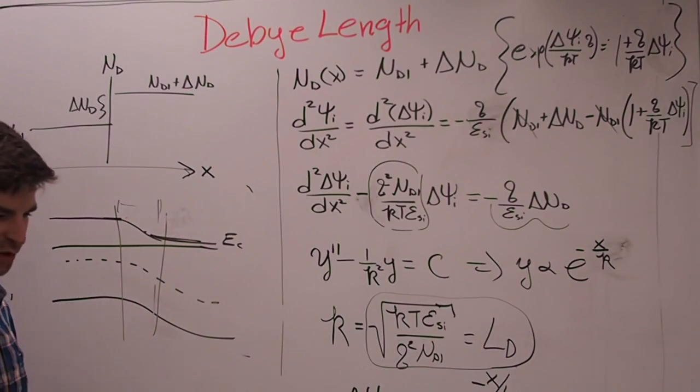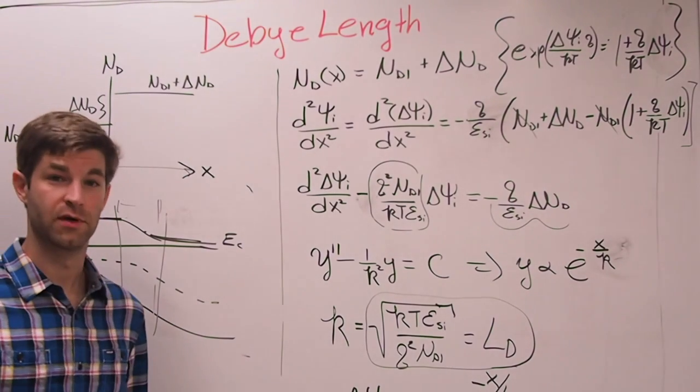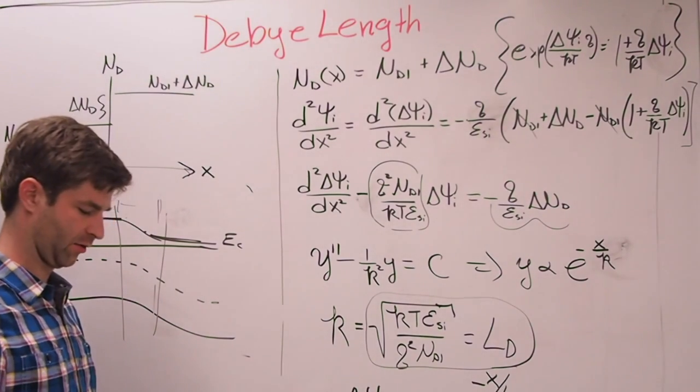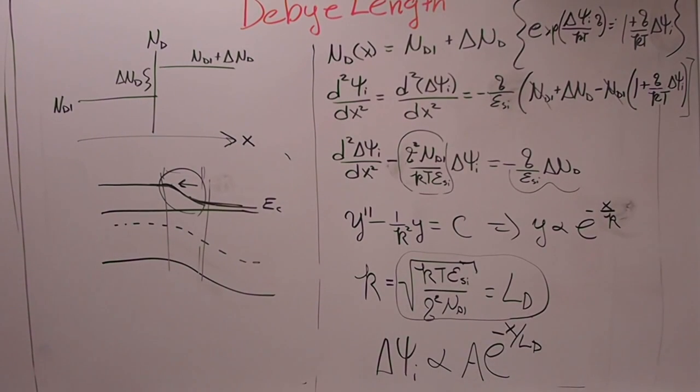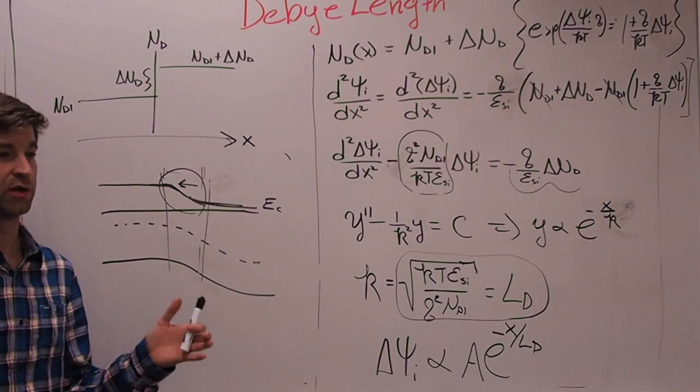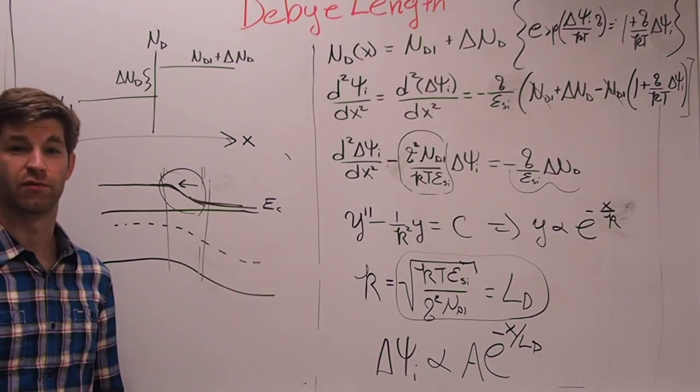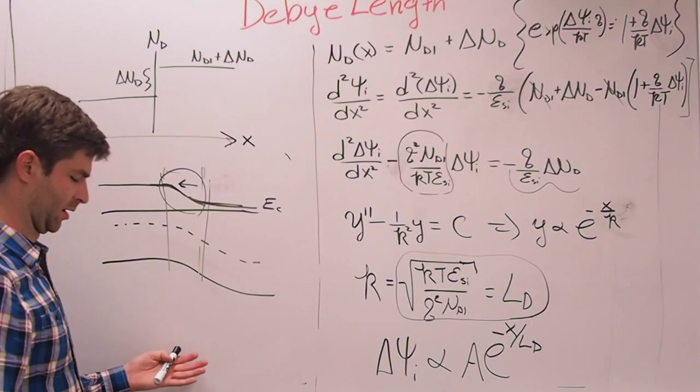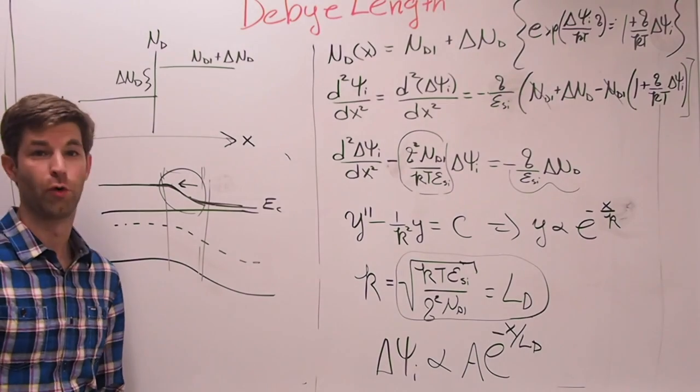The official definition for the Debye length, this is from a book written by a UCSD professor, it's the distance over which the free carriers rearrange themselves to shield the rest of the sample from a local electric field. Another definition, which more relates to what we just did is the distance over which a semiconductor band structure responds to abrupt changes in doping.